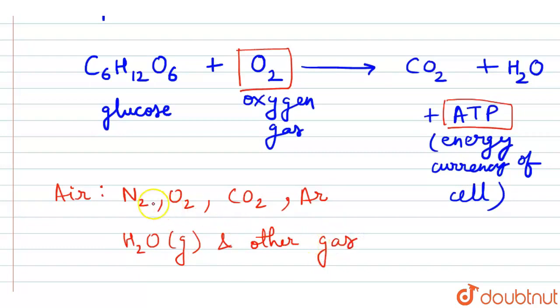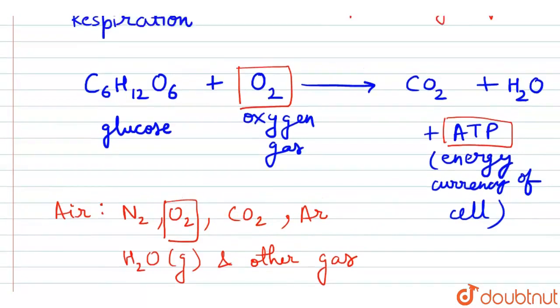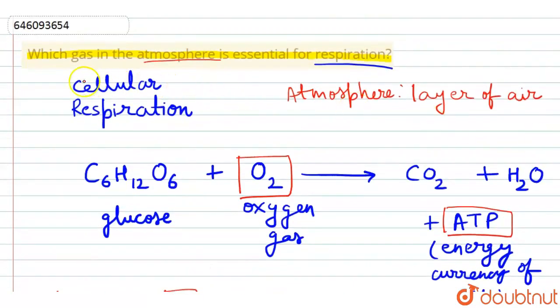यहाँ पर जो air का, जो कि atmosphere के layer है, इसका जो component यहाँ पर use होता है in cellular respiration, that is O2. Therefore, हमारा answer है oxygen. The gas in atmosphere essential for respiration is oxygen.